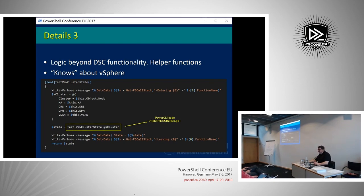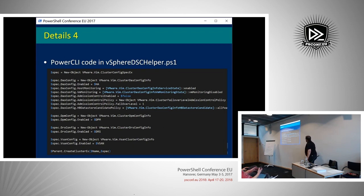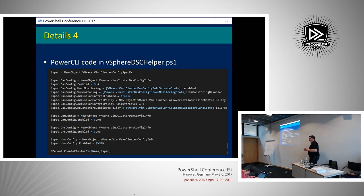Then we dive one further. All my PowerCLI code is actually in that PS1 file. In this case I'm using the APIs, not actually using PowerCLI cmdlets. The vSphere API can be a bit daunting in the beginning, but once you get the hang of it, it's quite straightforward. You compose your specifications and then you call the method which will implement. This is doing the same thing as what your New-Cluster cmdlet would do, but I have a bit more control on what I'm actually doing.